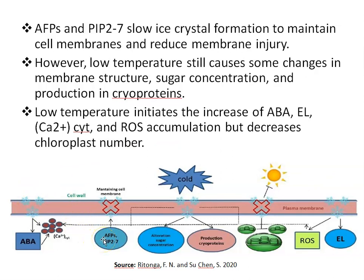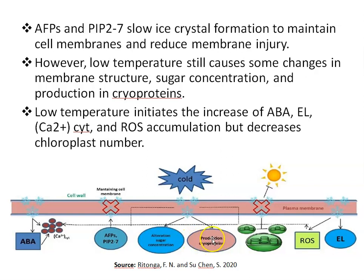Just look at this diagram. AFPs and PIP-2-7 are proteins that, when cold stress occurs and ice crystal formation starts, slow ice crystal formation, maintain cell membrane integrity, and reduce cell membrane injury. However, low temperature still causes some changes in membrane structure, sugar concentration, and production of cryoproteins.